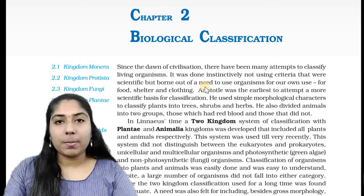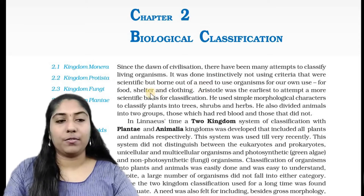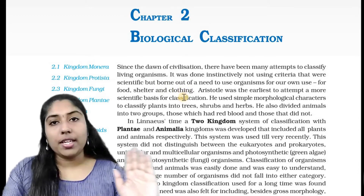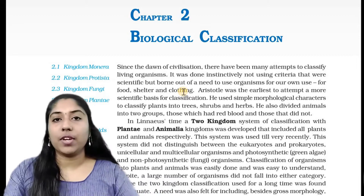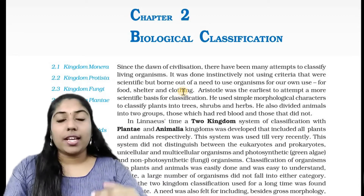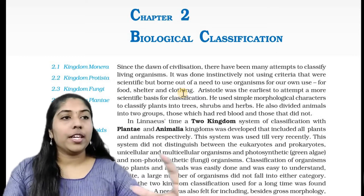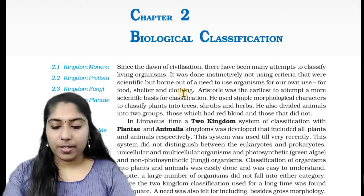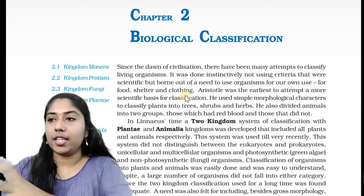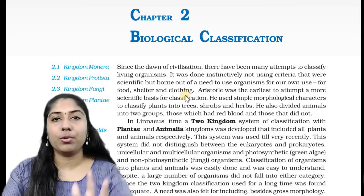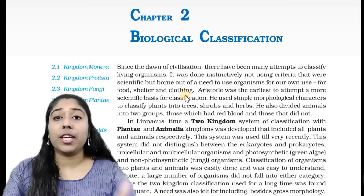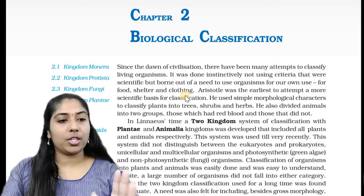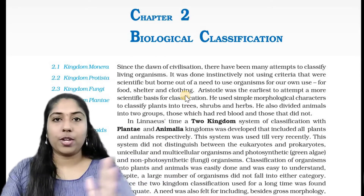Humans have needs — food, shelter, and other things. It is necessary. We have a classification of animals and plants around this area. That's why we classify things into categories such as shelter, clothing, and food. What is the classification?